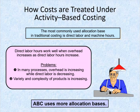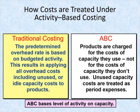The variety and complexity of products is also increasing at the same time. So activity-based costing is going to use more allocation bases. ABC systems may base the level of activity for each cost pool on the capacity of the activity rather than the budgeted level of activity.